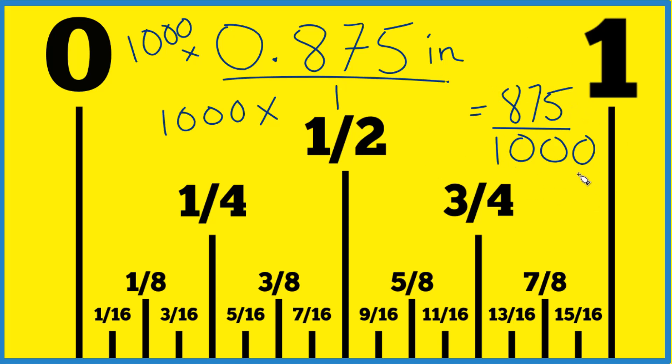Five goes into both of these numbers, but I'll bet 25 goes into both numbers as well. So let's divide 875 by 25, and that gives me 35, and a thousand divided by 25, that is 40.